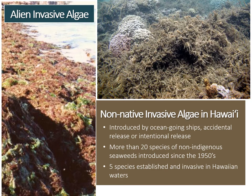Hawaiian reefs have experienced considerable damage from introduced algae over the last several decades. Alien invasive species are introduced species that arrived accidentally by ballast water or hull fouling of ocean-going ships, or by accidental or intentional release. The most harmful invaders displace native reef species and take over ecosystems. Although there are probably hundreds of introduced marine species in Hawaii, only a few have demonstrated exceptionally dangerous invasive tendencies. More than 20 species of non-indigenous seaweeds have been introduced to the Hawaiian islands since the 1950s, and five have become established on reefs and pose a threat to coral reef health.